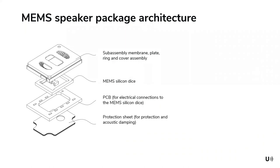Here is the full stack: we have a PCB with standard layers. We flip-chip the MEMS onto the PCB. On top, we have a sub-assembly that includes an acoustic membrane, a plate that adds stiffness to the system, and a cover to protect the loudspeaker from external shock.